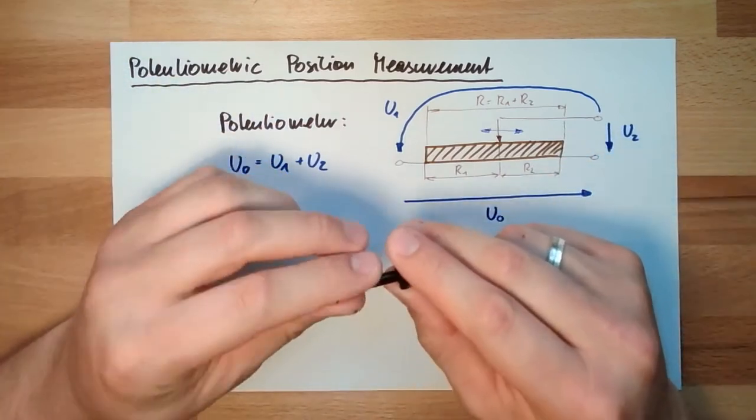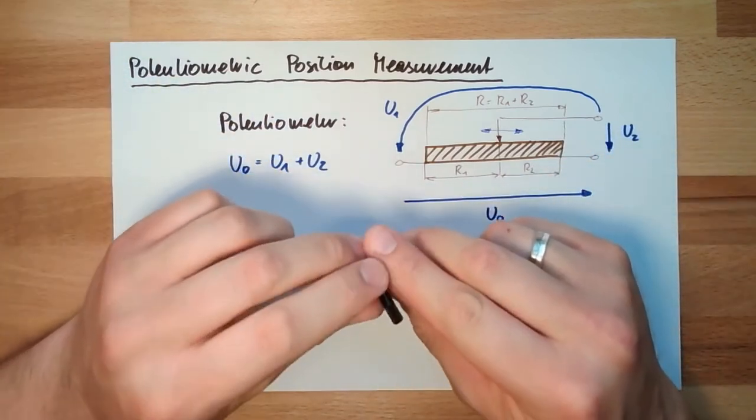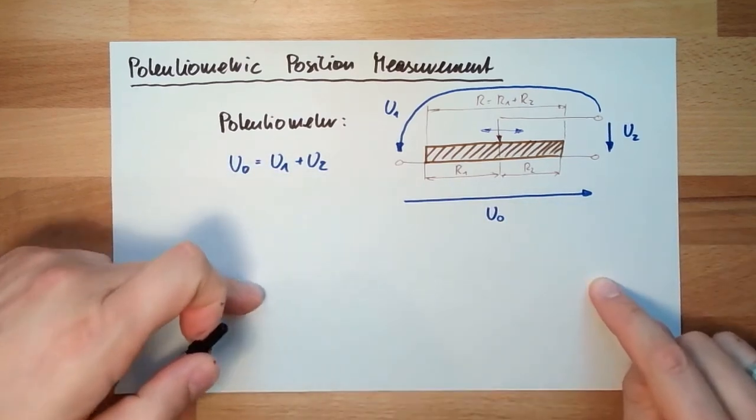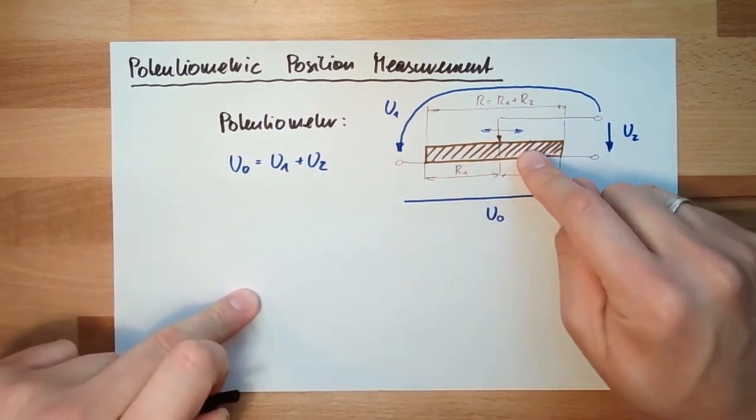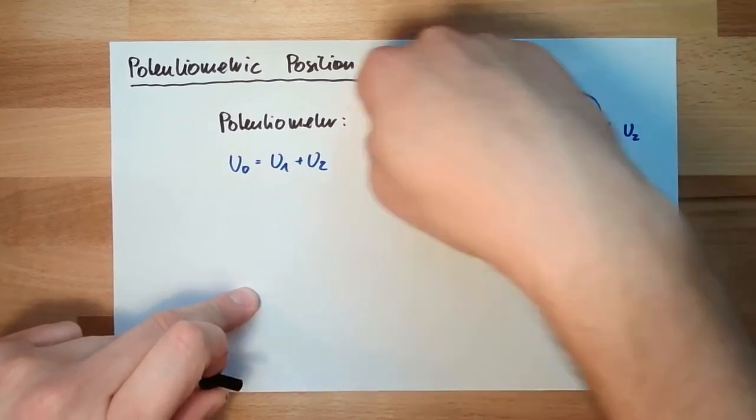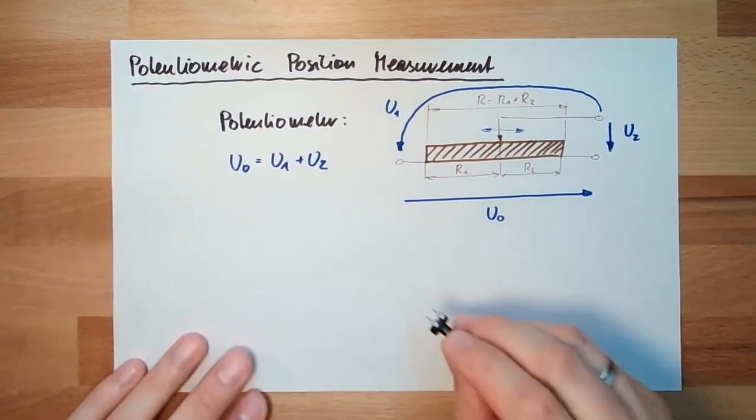However, there are other form factors as well. There are also linear potentiometers which do exactly look like this. Then I can move linearly - then it's really position measurement.